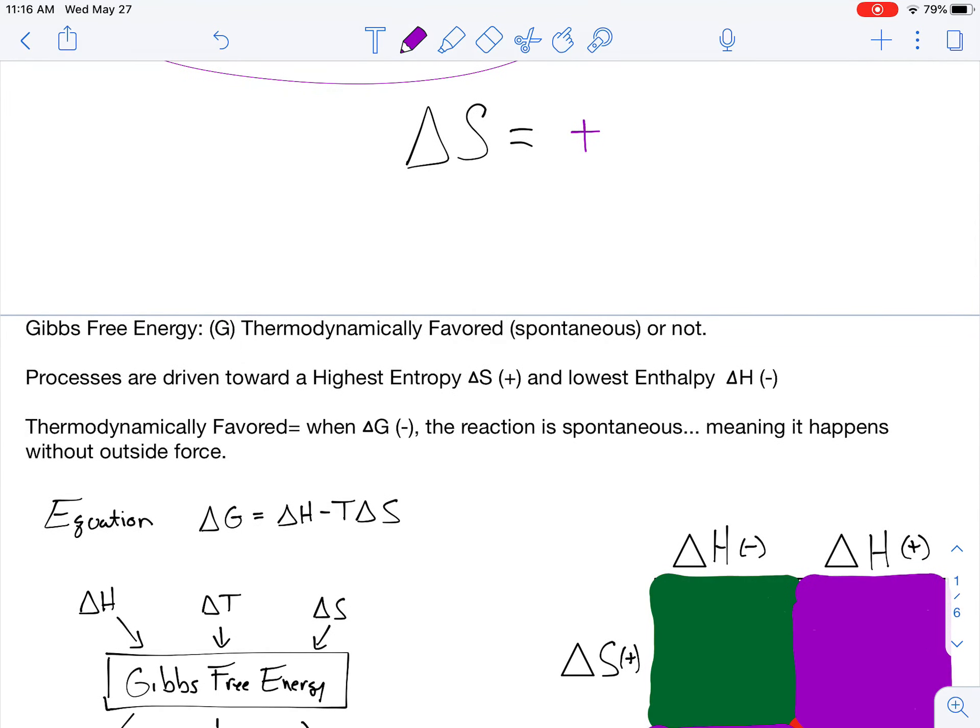Gibbs free energy is a little bit more confusing. That's another calculation. Gibbs free energy, variable G, is really calculating whether or not things are thermodynamically favored. Thermodynamically favored is a very fun chemistry type way to say spontaneous. In life, or in nature, processes are driven towards the highest possible entropy, meaning they're more random, and the lowest possible enthalpy, meaning they don't have a lot of potential energy. They're more stable.